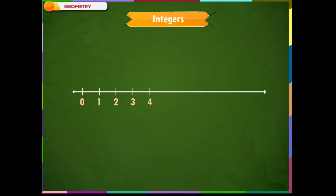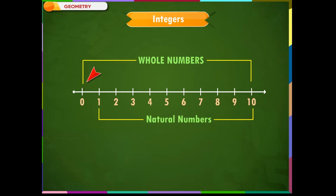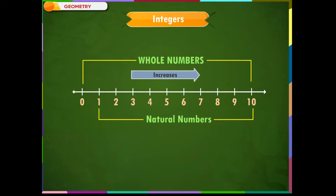Let us study about a new type of numbers called integers. We have already studied about whole numbers and natural numbers. We know that 0 along with the natural numbers are called whole numbers. We also know that a number line starts from 0 and the numbers increase as we move towards the right.